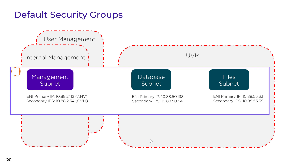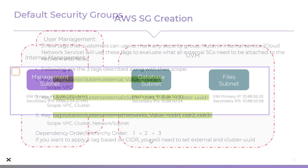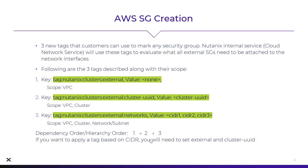We needed a dynamic way for users to add their own security groups into the environment that also works with the fact that we're adding and removing ENIs. You could have done scripting before, but it might not have persisted. Also, clusters using hibernation — shutting everything down and then resuming — would not retain these custom security groups. We've addressed that with AOS 6.7.